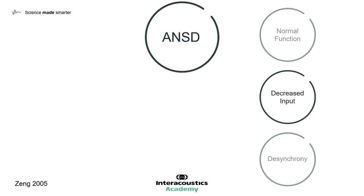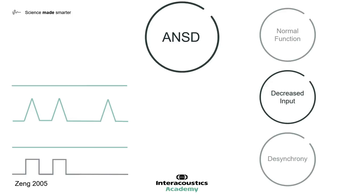In the case of decreased input, we see the same signal being presented, but this time only one of the three nerve fibres actually fires in response to the signal. It also has its resting firing rate. In the average signal, it is very hard to see the response to the signal against the resting firing rate.